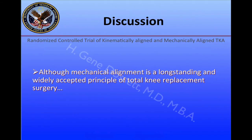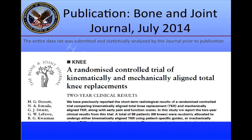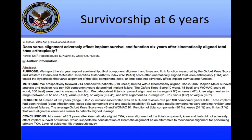Although mechanical alignment is a long-standing and widely accepted principle of total knee replacement surgery, this Level 1 study shows that an alignment technique based on restoring the prearthritic kinematics for each patient's particular knee can produce significantly better results at two years with regard to pain, function, and motion, compared to mechanical alignment. Our study was published in the Bone & Joint Journal in July 2014, and the entire data set was statistically analyzed by the journal prior to publication. This year, a study by Dr. Howell showed his cases have survivorship at six years of 97.5%.